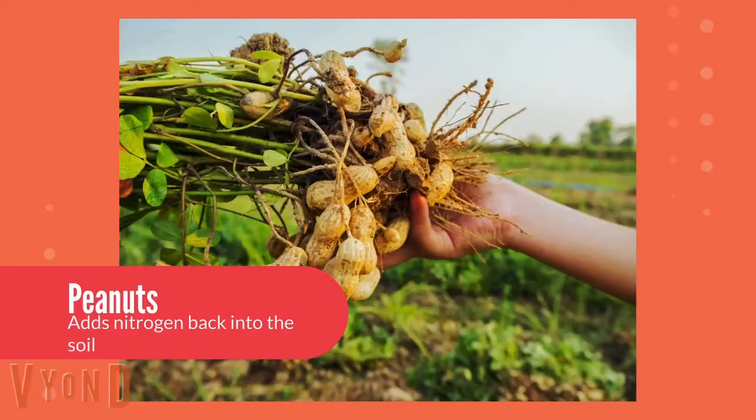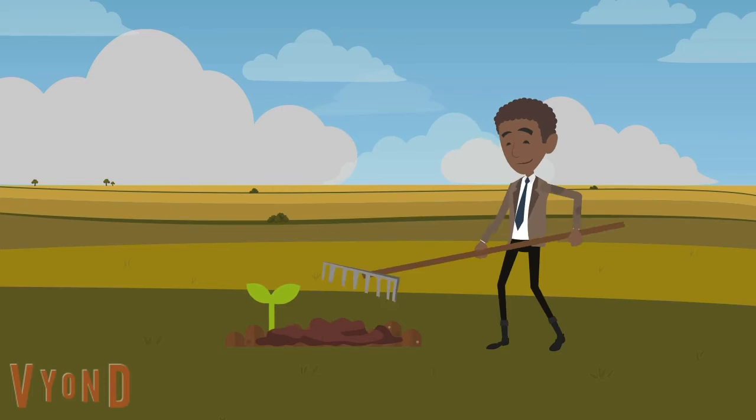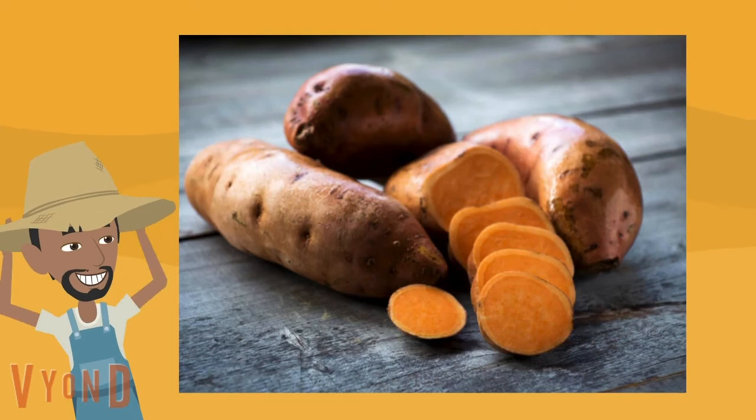He taught people how to take care of their soil by planting peanuts. The peanut plants would help add nutrients into the soil which helped the plants grow. Thanks to George Washington Carver, people started learning how to grow all types of vegetables, such as sweet potatoes.